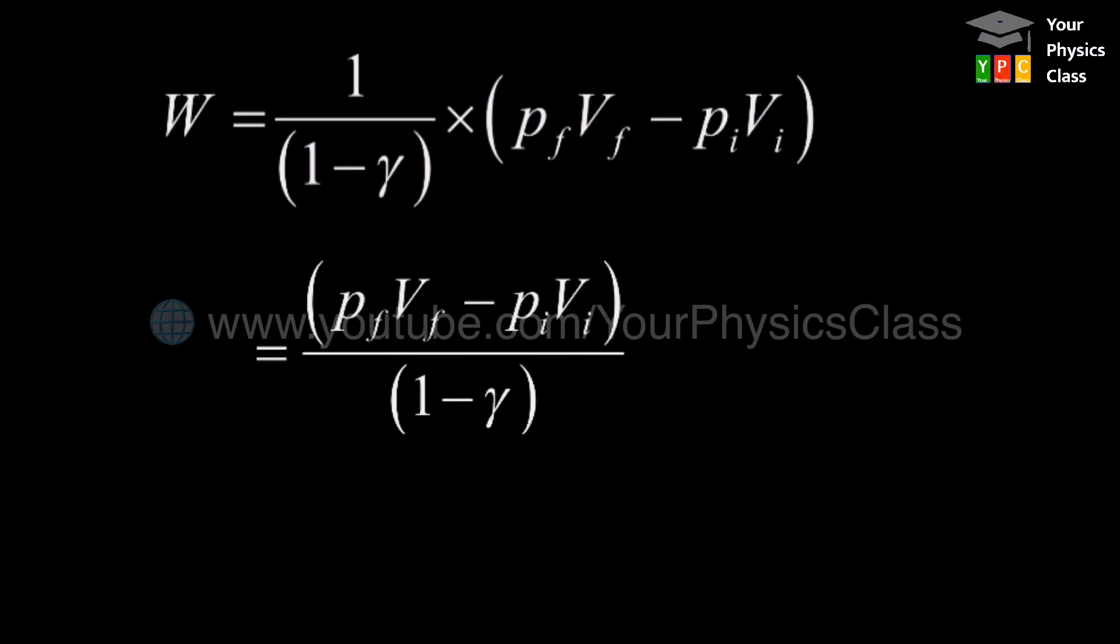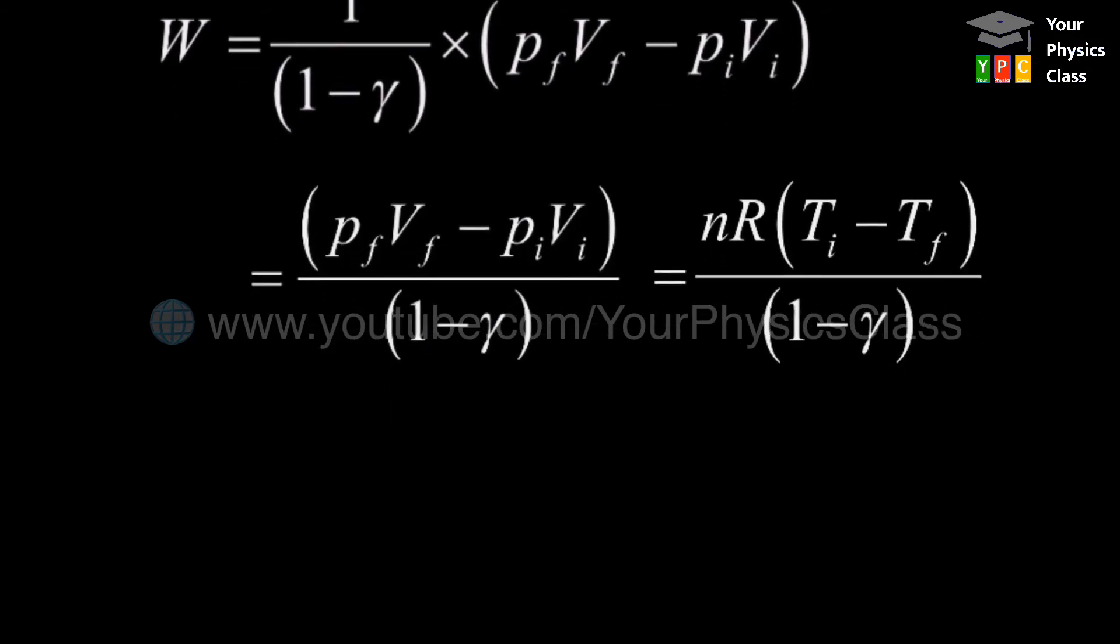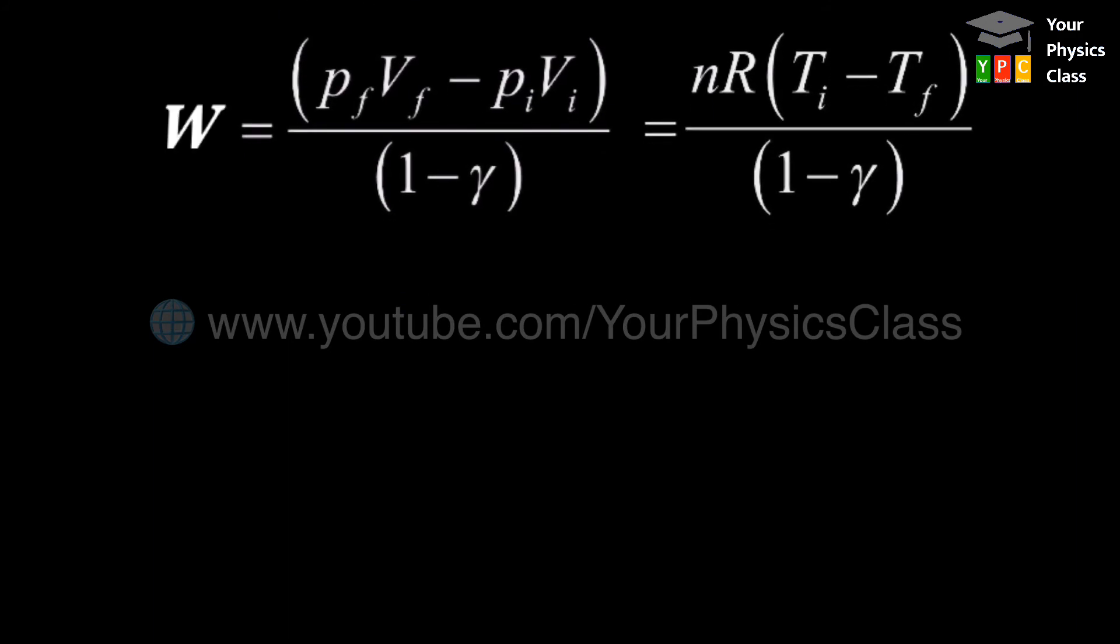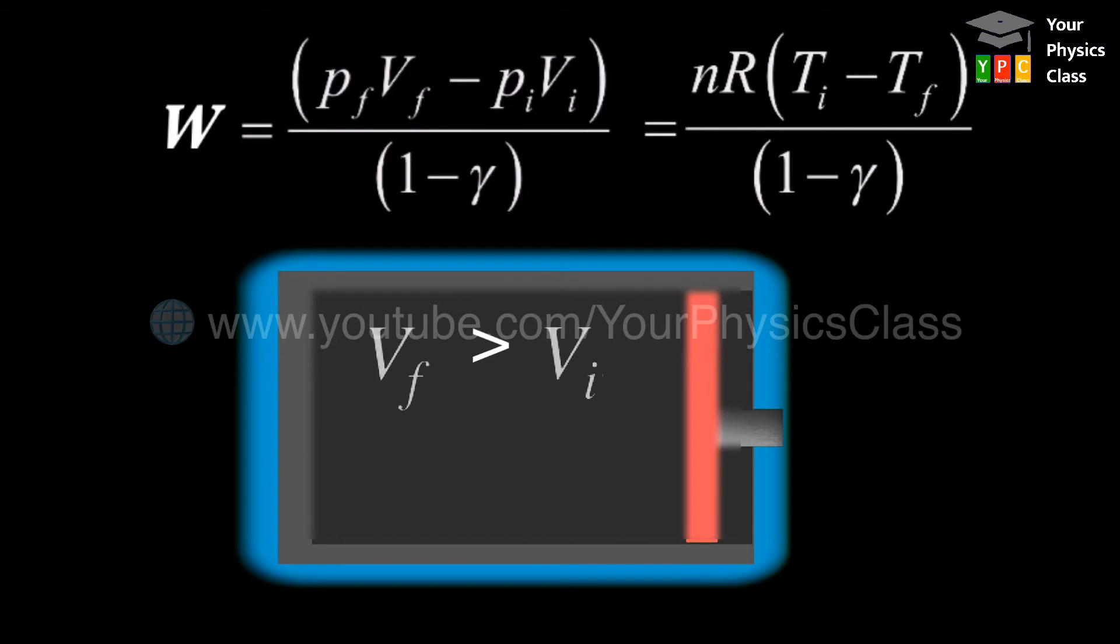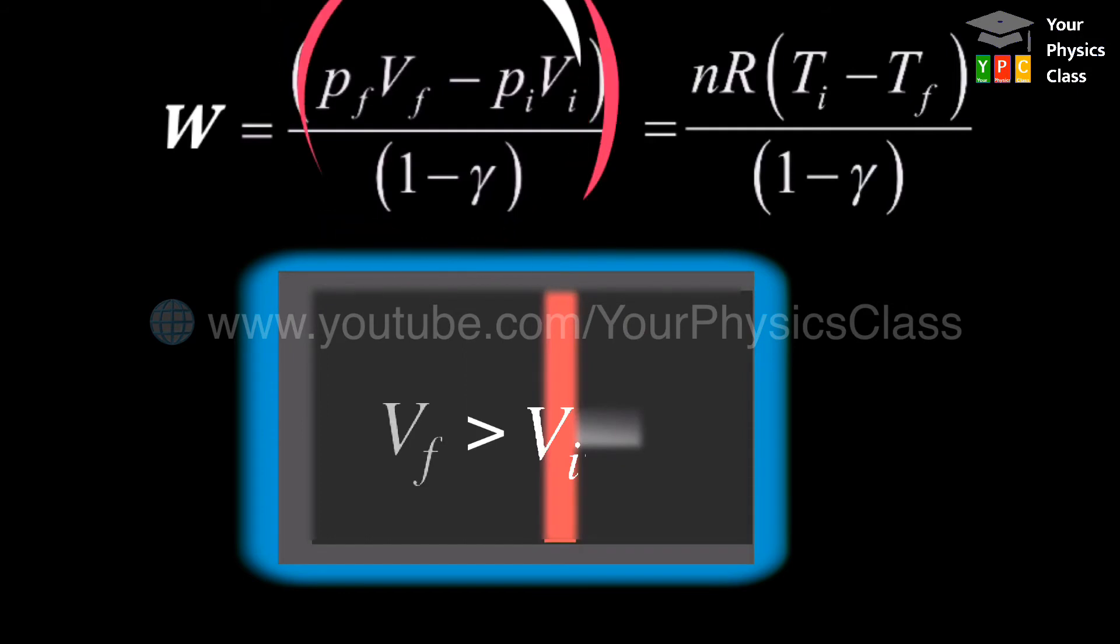In terms of temperature, we may write nR times Ti minus Tf divided by 1 minus gamma. From the above equation, it is clear that when the gas undergoes adiabatic expansion, then work done is positive and the gas cools down. On the other hand, if the gas is compressed, work done will be negative and temperature of the system will increase.